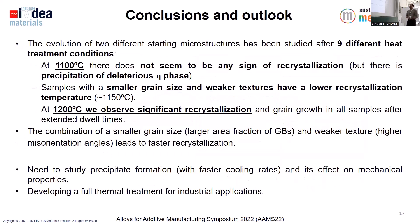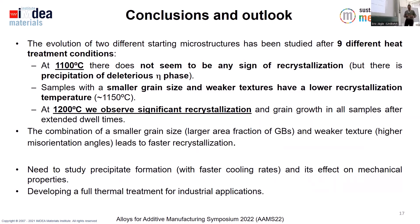In conclusion, at 1100°C we do not have any clear signs of recrystallization, but we do have eta phase precipitation, which we do not want. Samples with a smaller grain size and weaker starting texture have a slightly lower recrystallization temperature. It is only at 1200°C and after eight hours that we observe significant recrystallization in all cases. Our hypothesis is that the smaller grain size in the 70 micron microstructure, meaning a larger grain boundary area fraction and higher misorientation angles due to the weaker texture, leads to faster recrystallization. Future work will study precipitate formation with faster cooling rates under industrial conditions, and the other thermal treatment steps of IN939 to develop the full thermal treatment for its industrial applications.